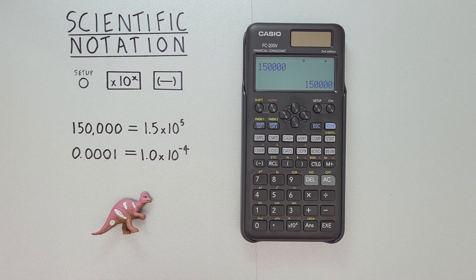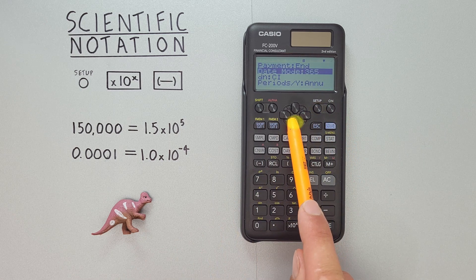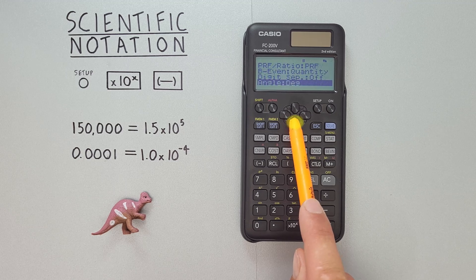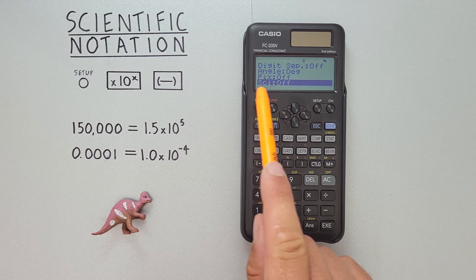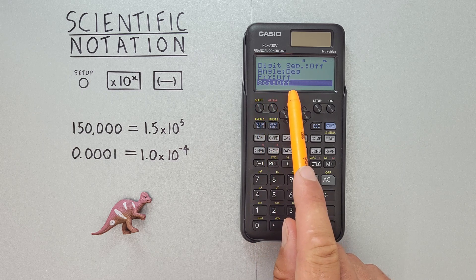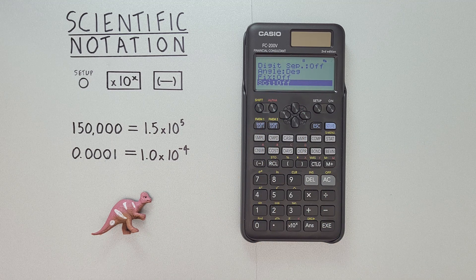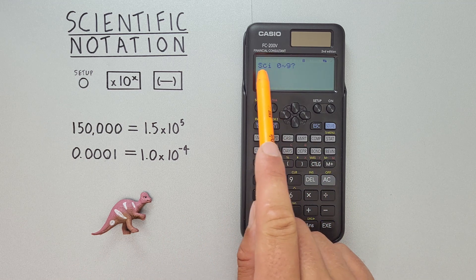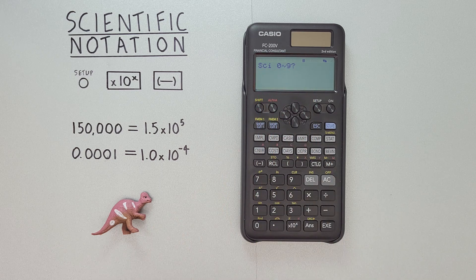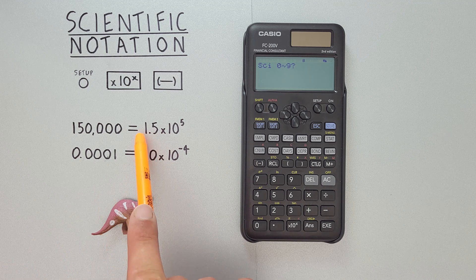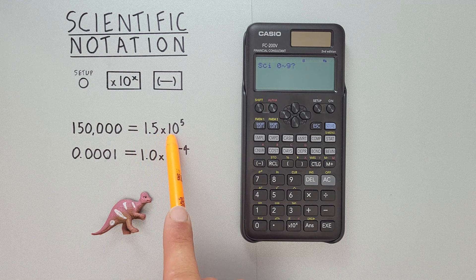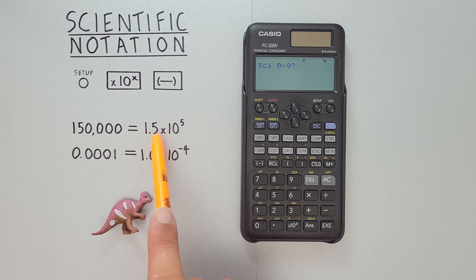But if we want to get our numbers in scientific notation, what we do is we go to setup and then scroll down until we see SCI here. Normally it says off. To turn on scientific notation, we select it, and then it'll ask us SCI, or scientific notation, 0 to 9. This is asking how many digits do we want to display. If we want to display our numbers like 1.5 times 10 to the power of 5, we want two digits, so we'll select 2.